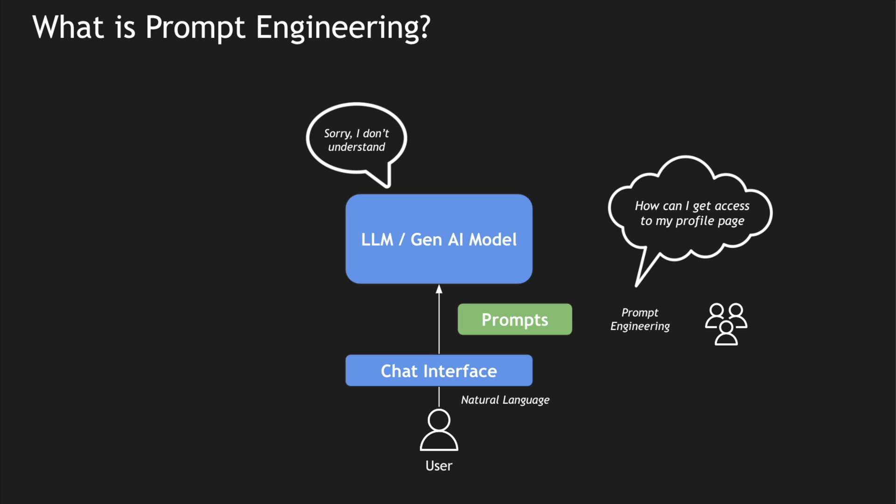A classic example: I have a chat interface and I'm asking the LLM 'How can I get access to my profile page?' If the LLM is not able to understand, it says 'Sorry, I don't understand that.' However, prompt engineers go and check these kinds of failures — prompts which were unresponsive or did not result in an efficient outcome — and then fix the prompts or the LLMs to make sure they understand those questions.